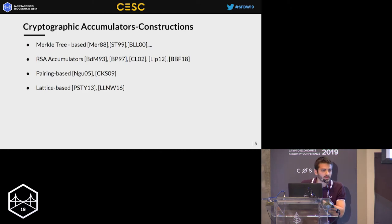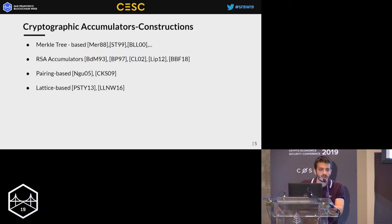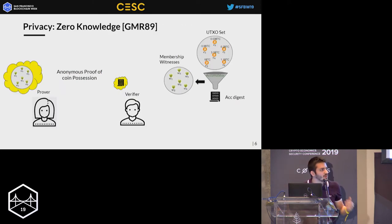Thankfully there are many nice works in the cryptographic literature about cryptographic accumulators, starting from the famous Merkle trees that are widely used, RSA accumulators which are going to be the focus of this talk, and accumulators from pairings and lattices. Now let's move to the other property: zero knowledge.